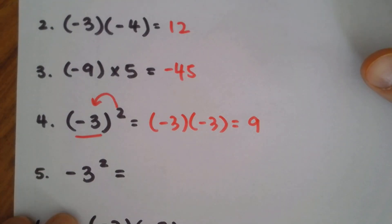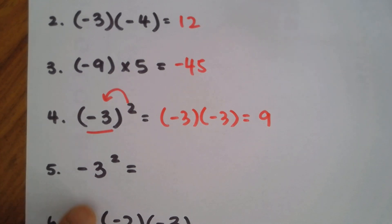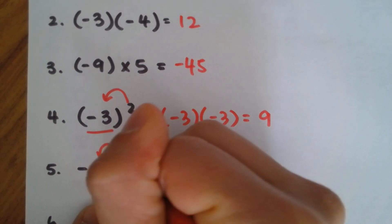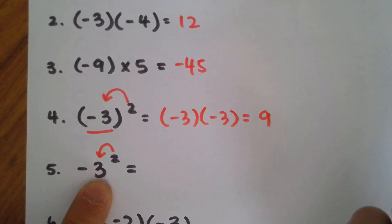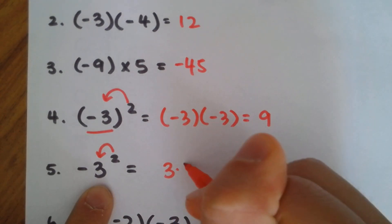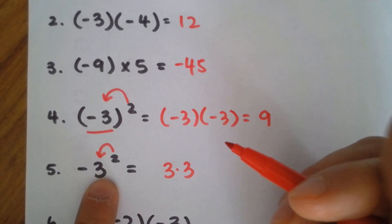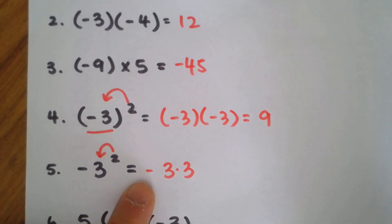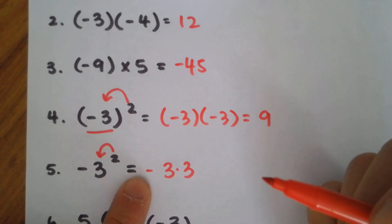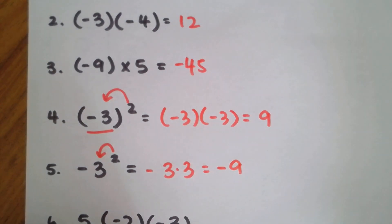For number five, you're probably thinking this is the same problem — but no. You see, this exponent only duplicates the three; there are no parentheses this time. So you do three times three, and then put a negative sign outside. Three times three is nine, and with the negative sign, that's negative nine. That's your answer.